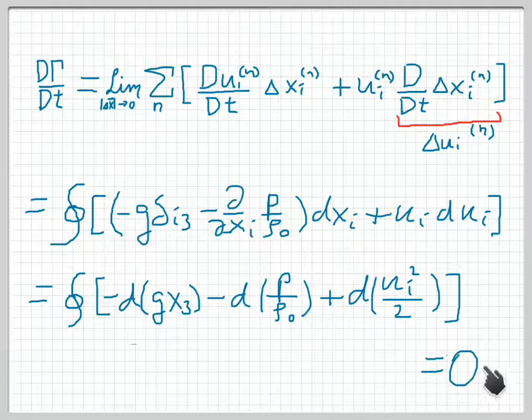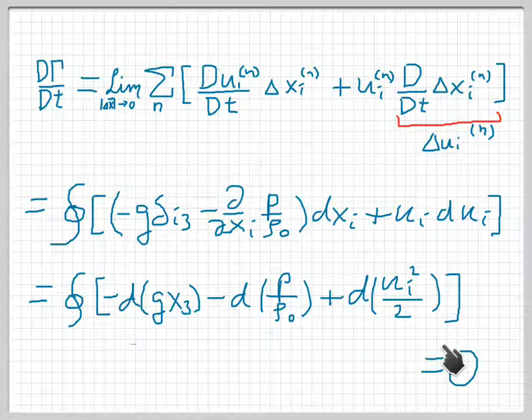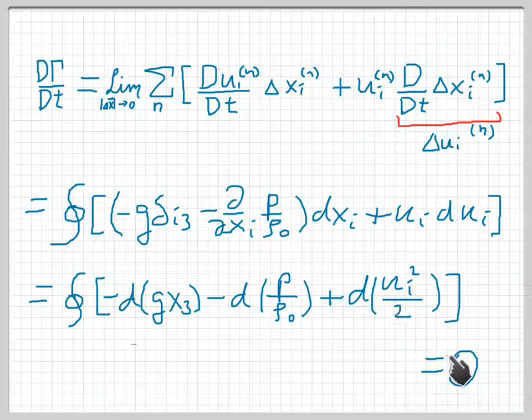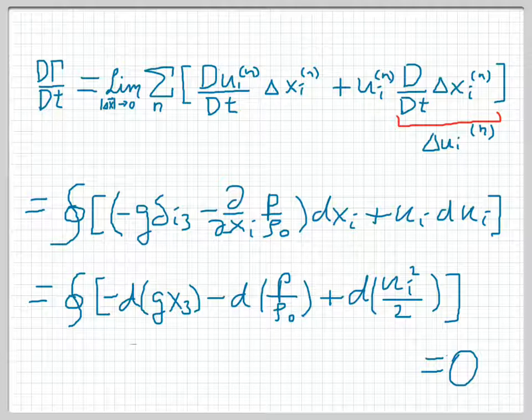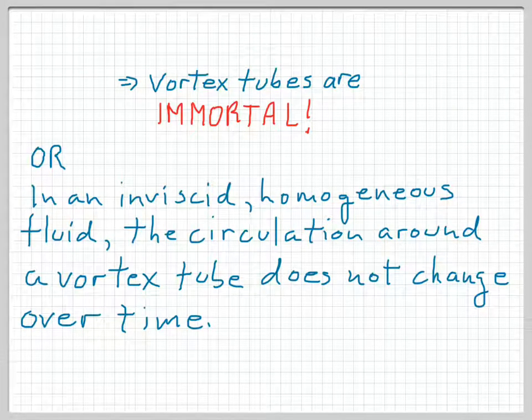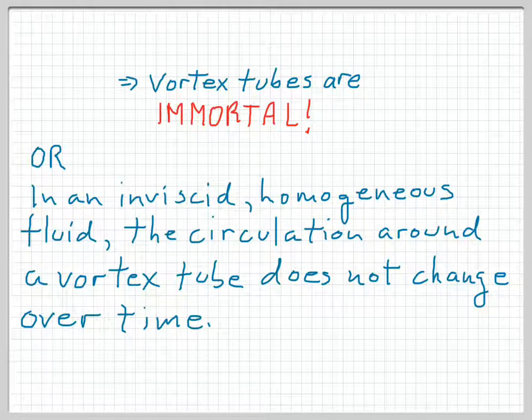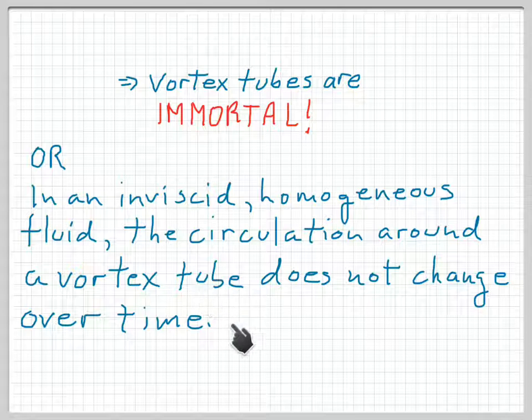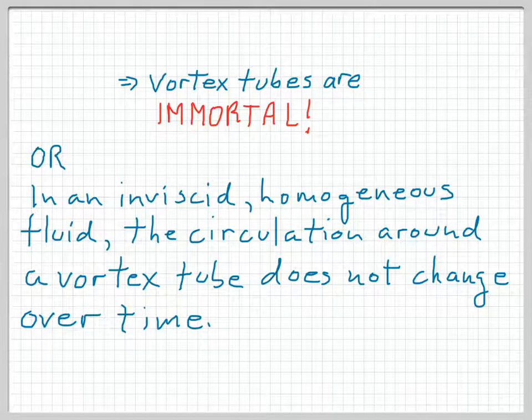Therefore, this whole thing adds up to zero, and the material derivative of the circulation Γ with respect to time is zero. What does this mean? It means that vortex tubes are immortal. They live forever. Or to put it a little bit more formally, in an inviscid homogeneous fluid, the circulation around a vortex tube does not change in time. And that is Kelvin's theorem.